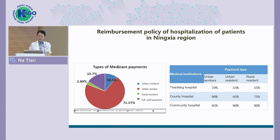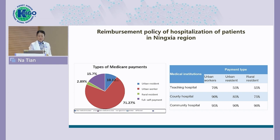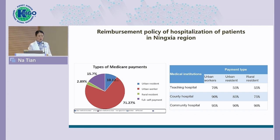The payment coverage differs by hospital level. In the teaching hospital, 70% of urban workers and 55% of urban and rural residents are covered by the government. In county hospitals, the proportions are 90%, 85%, and 75% respectively. In community hospitals, about 90% to 95% of patient payments can be covered by the government, so policy advocates all patients to go to community hospitals for treatment.